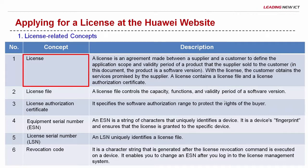A license is an agreement made between a supplier and a customer to define the application scope and validity period of a product that the supplier sold to the customer. In this document, the product is the software version. With a license, the customer obtains the services promised by the supplier.